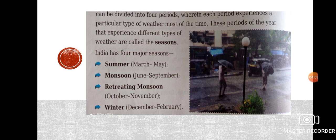India has four main seasons: summer season, which starts from March and ends in May; monsoon or rainy season, from June to September; retreating monsoon — when the monsoon finishes and winter starts — from October to November; and winter season, from December to February. All these seasons together form the climate of a region.